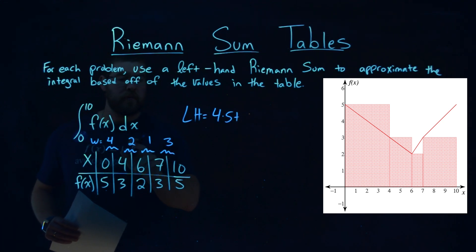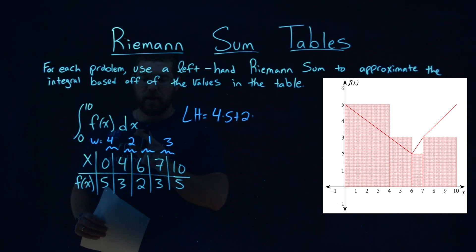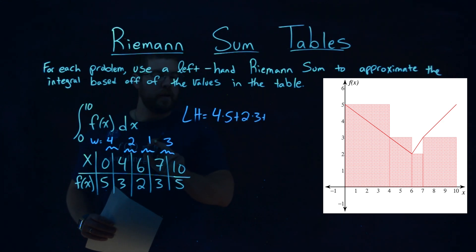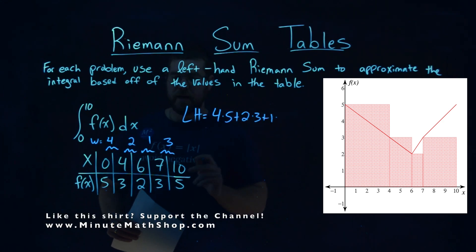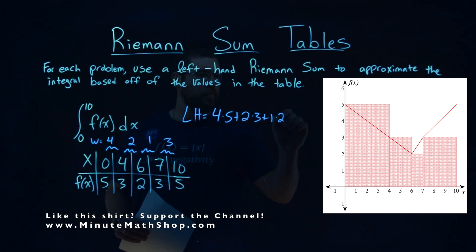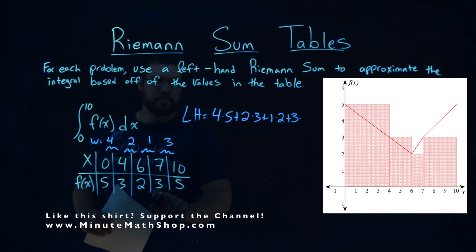Same thing next one, we have a width of 2 times its height on the left is a 3. Width of 1 is next, plus the width of 1 times its height of 2. The y value, right? F of x. Plus lastly, width of 3 times its height of 3.